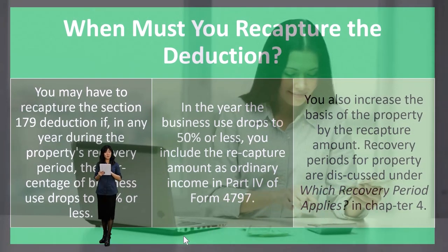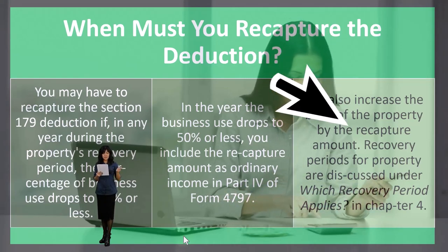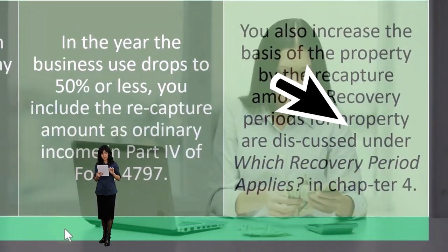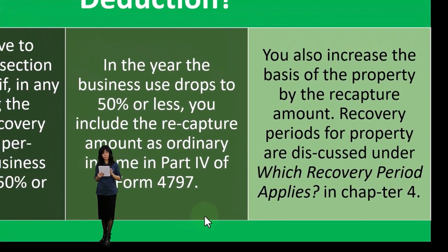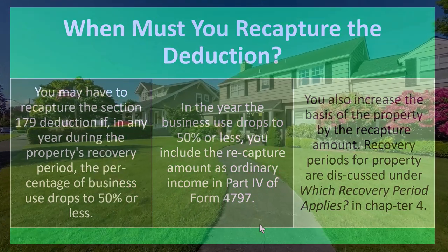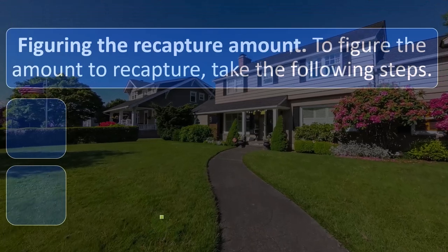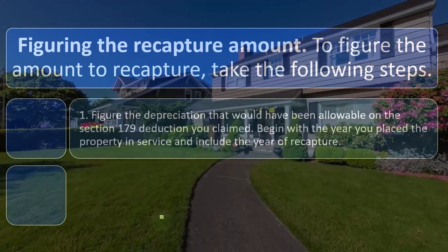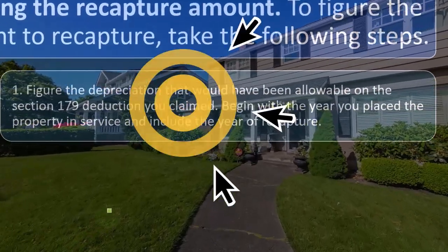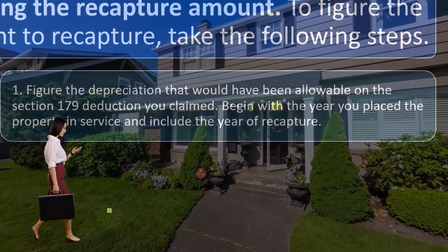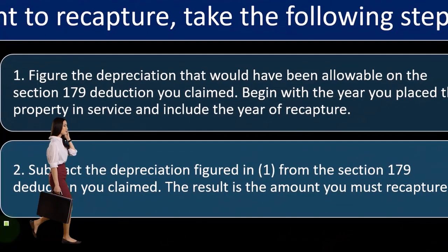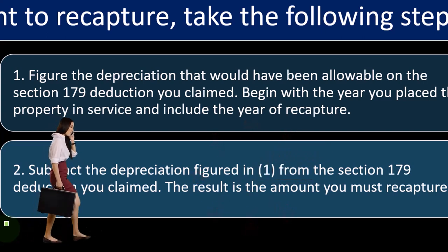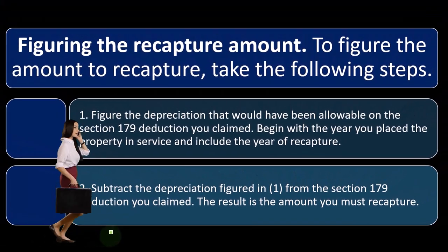You also increase the basis of the property by the recapture amount. The deduction recovery periods for property are discussed under 'Which Recovery Period Applies' in chapter four. To figure the amount to recapture, take the following steps: One, figure the depreciation that would have been allowed on the Section 179 deduction you claimed, beginning with the year you place the property in service and including the year of recapture. Two, subtract the depreciation figured in step one from the Section 179 deduction you claimed. The result is the amount you must recapture.